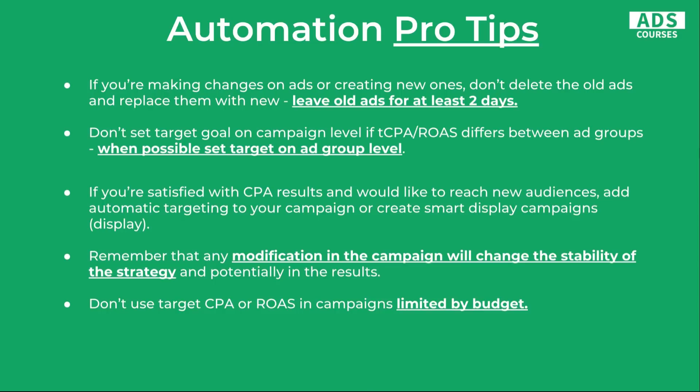Another tip: don't set the target goal at campaign level if your target CPA or ROAS differs between ad groups. When it's possible, set target CPA or ROAS at the ad group level, because performance may differ across ad groups and you don't want to set everything at the same level. Another pro tip: if you're satisfied with your CPA or ROAS results and would like to reach new audiences, add automatic targeting to your campaign or create smart display campaigns.